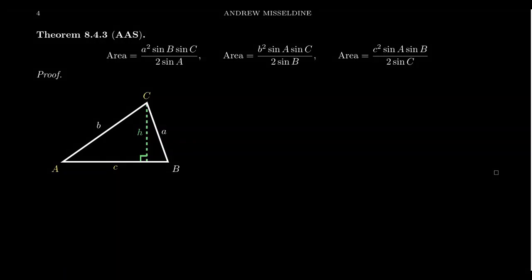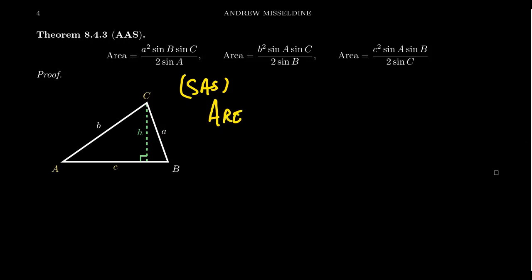In a previous video, we talked about the classic area formula for a triangle: area equals one half base times height. In that formula, the base can be any of the three sides, and the height is the length of the corresponding altitude to that side. For oblique triangles, the altitude length is not necessarily known at the start. Using a bit of trigonometry, assuming we know side B, side C, and angle A — a side-angle-side situation — the area equals one half BC sine of A.